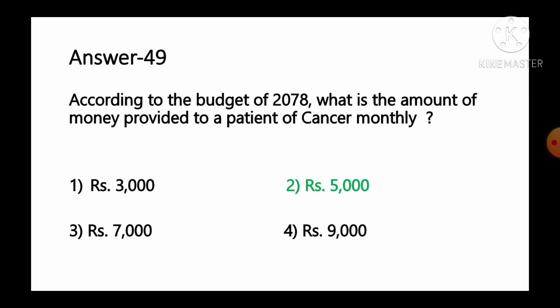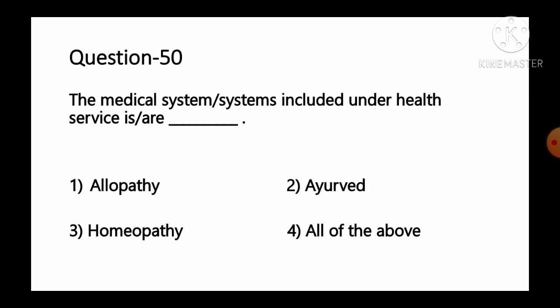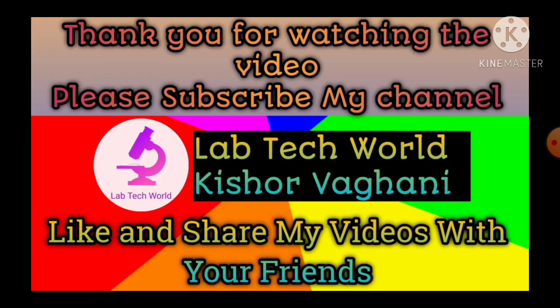Question number 50 (last question): The medical system or systems included under health services are — option 1 allopathy, option 2 Ayurveda, option 3 homeopathy, option 4 all of the above. All are medical systems included under health services — allopathy, Ayurveda, and homeopathy practices are all included. So option number 4, all of the above, is the correct answer. That's all for today — thank you for watching. Please subscribe to our channel Lab Tech World, and if you like our work, please like and share our videos with your friends. Thank you very much.